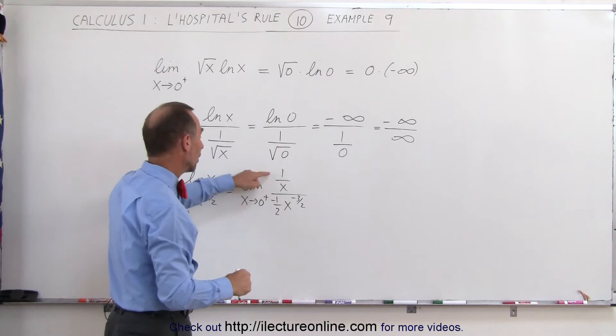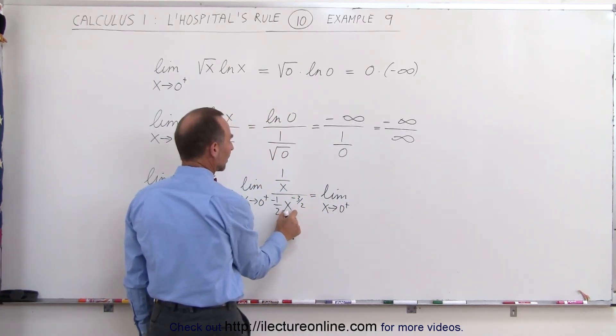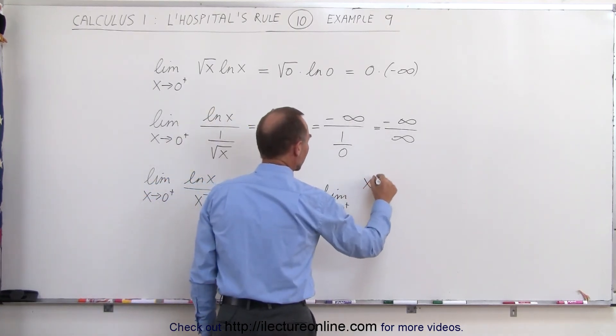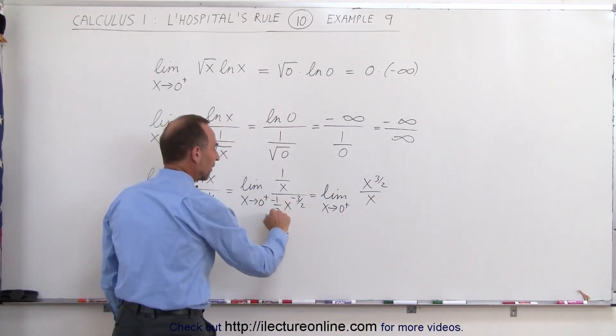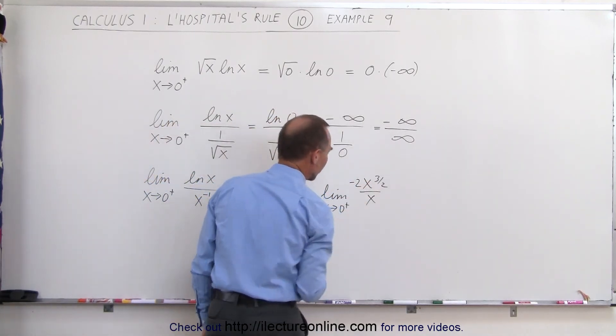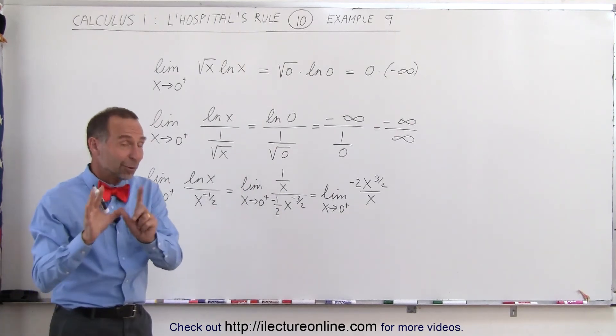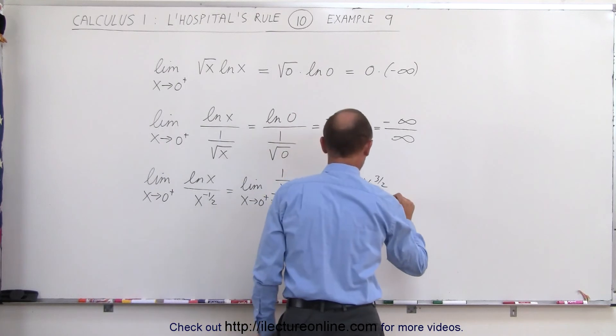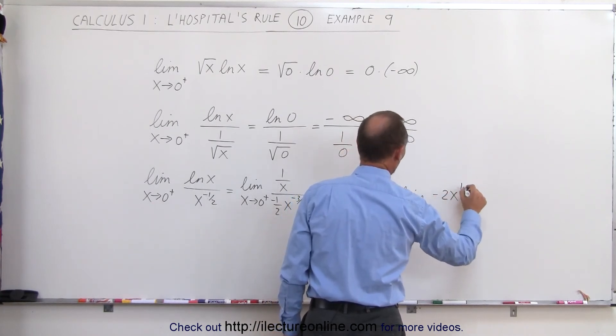Now simplifying that, we can move the 2 up here. This can be written as the limit as x approaches 0 from above. This can now be written as x to the 3 halves in the numerator divided by x, and divide by 1 half the same as multiplying times 2, but there's a negative there, so minus 2. Now we divide the x into here.